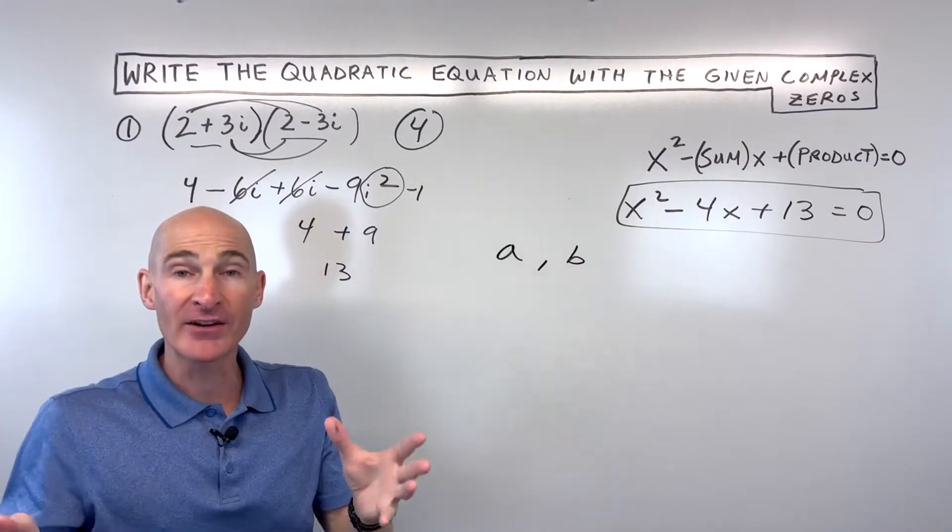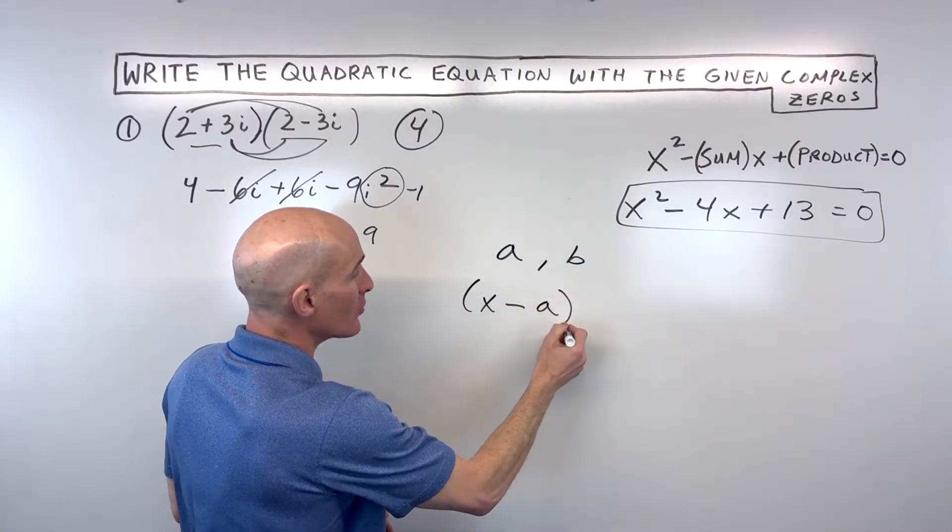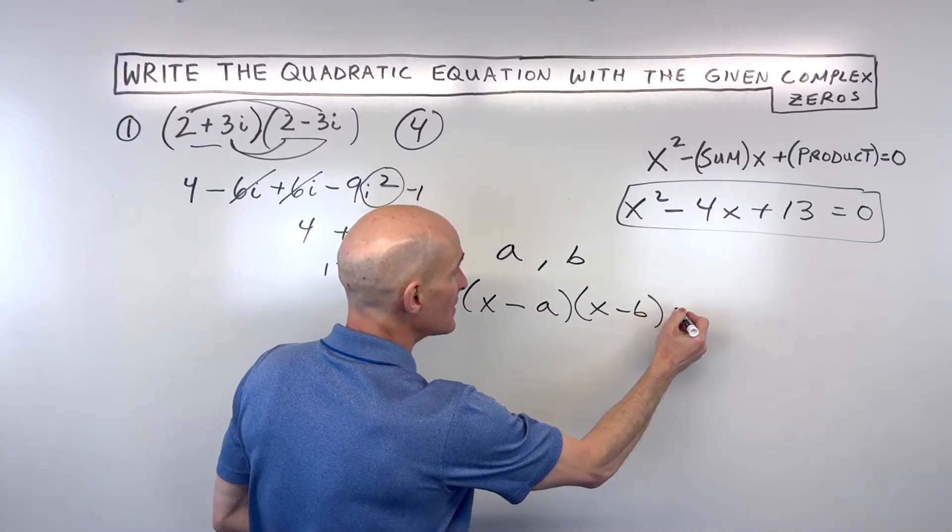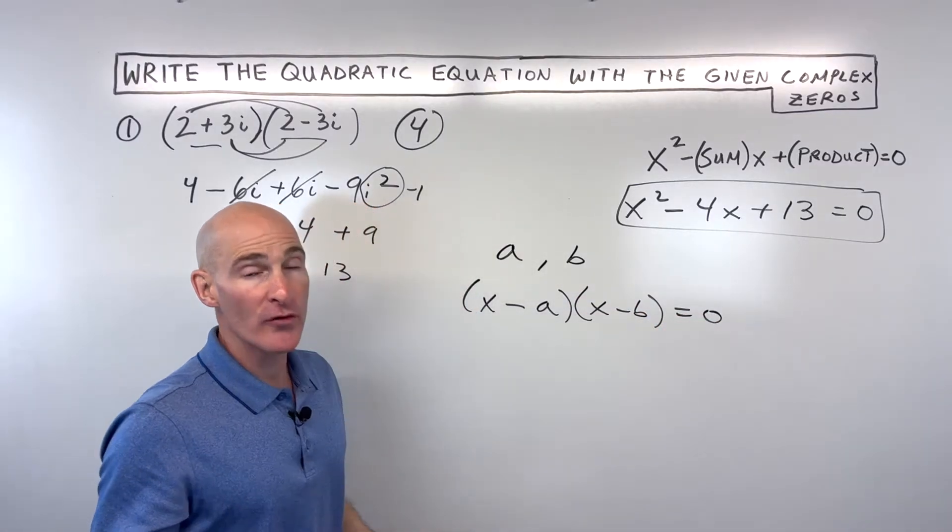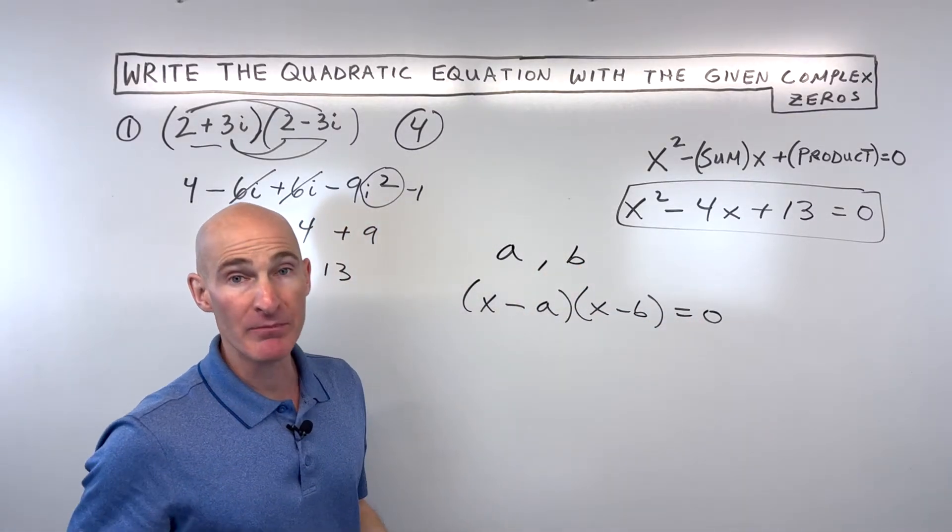So when you find the factors, you say x minus the zero is a factor. So x minus a times x minus b is equal to zero. And we know from the zero product property that if you set these factors to zero, you're going to get back a and b.